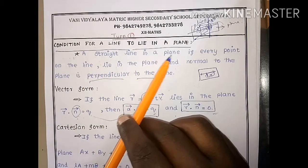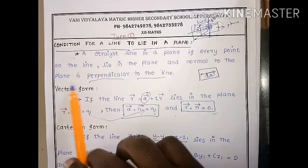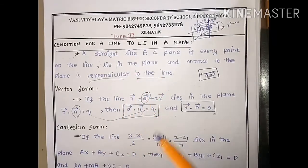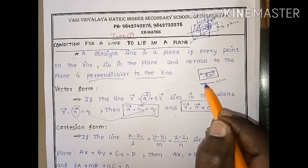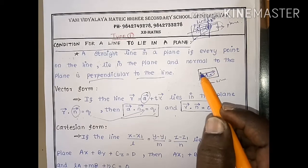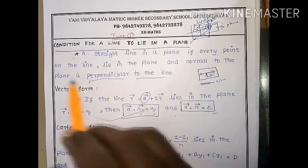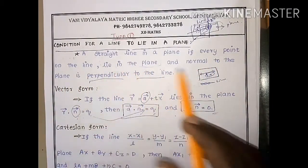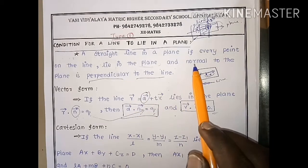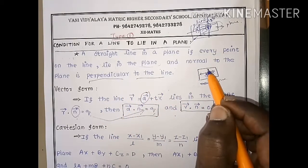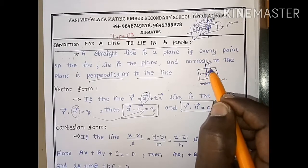A straight line lies in a plane if every point on the line lies in the plane, and the normal to the plane is perpendicular to the line. If you have a line with infinite points, every point on it must lie on the plane. The normal vector is already perpendicular to the plane.